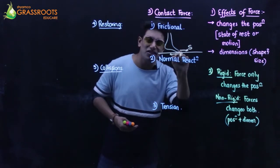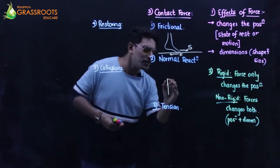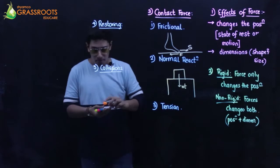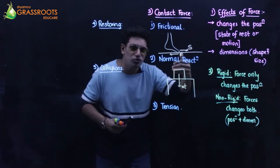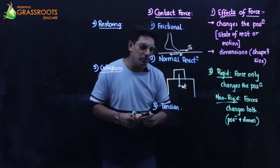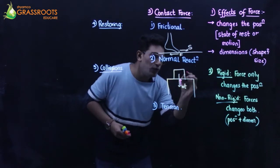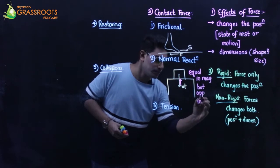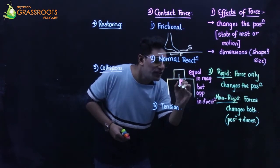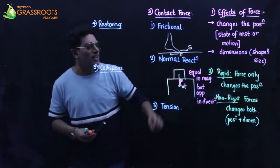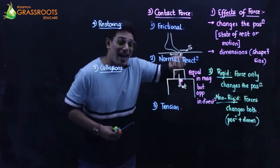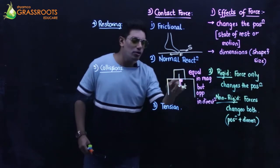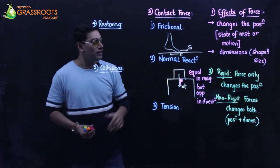Frictional force is obviously a contact force because there is a touch. For normal reaction force: when there is an object on the table, the weight acts vertically downwards, but the object does not fall because the table exerts a force equal in magnitude to that of the book but opposite in direction, and it is perpendicular - 90 degrees, normal - to the surface. The book exerts an action force, the surface exerts a reaction force, hence the name normal reaction.